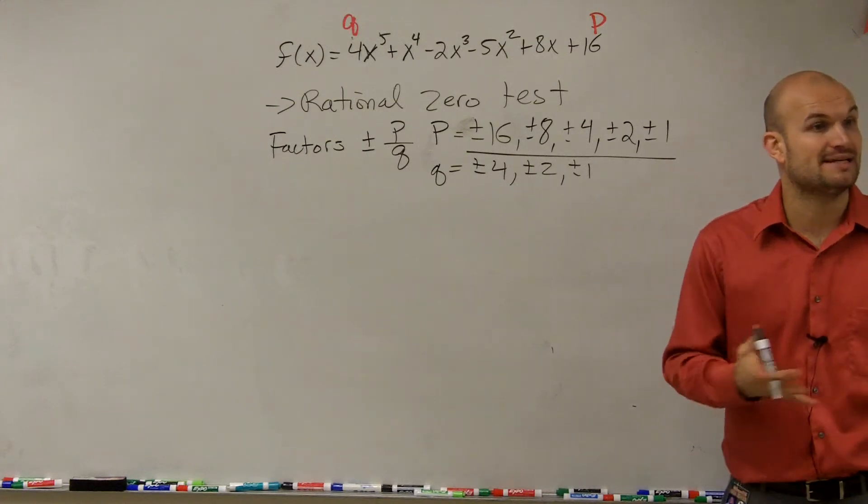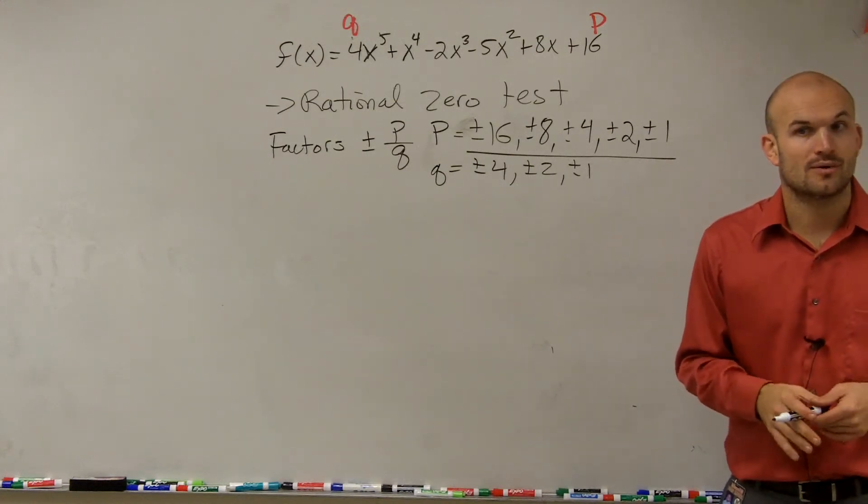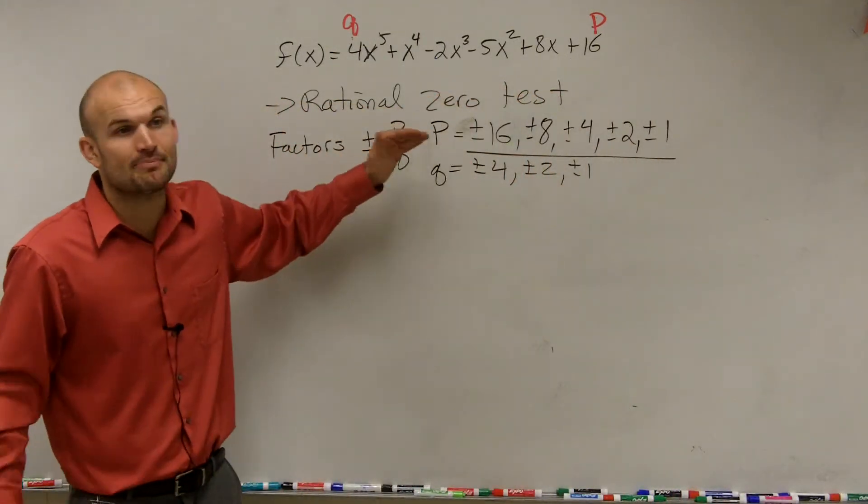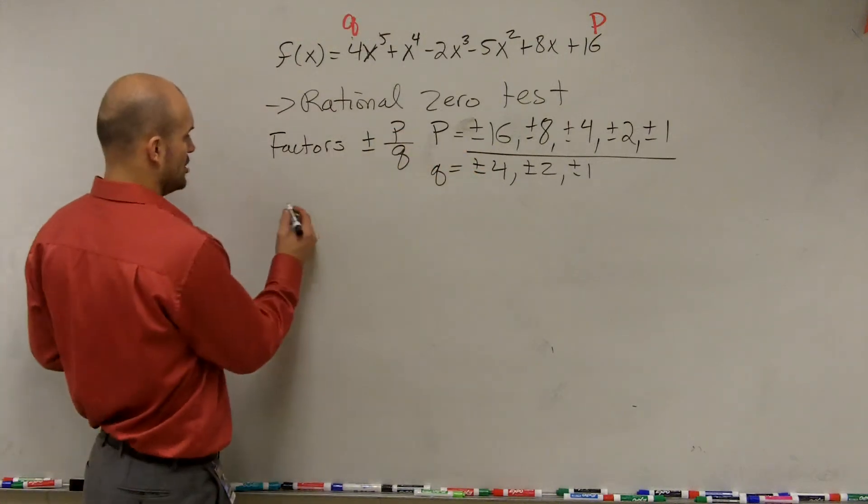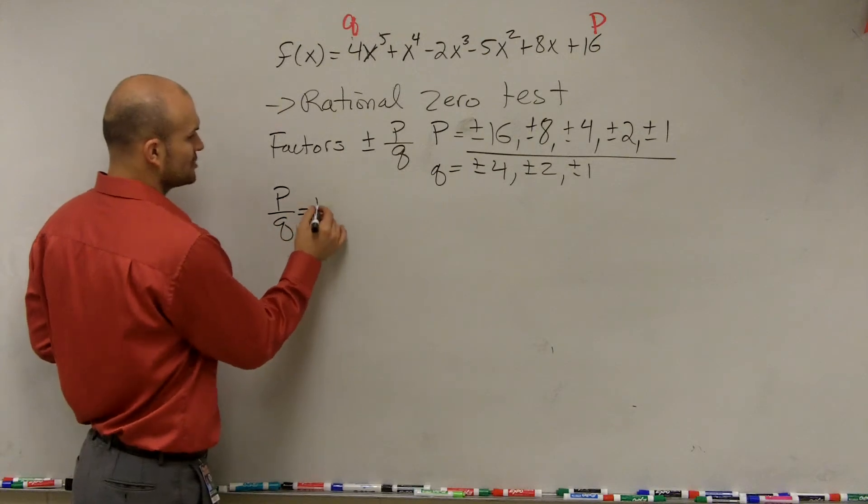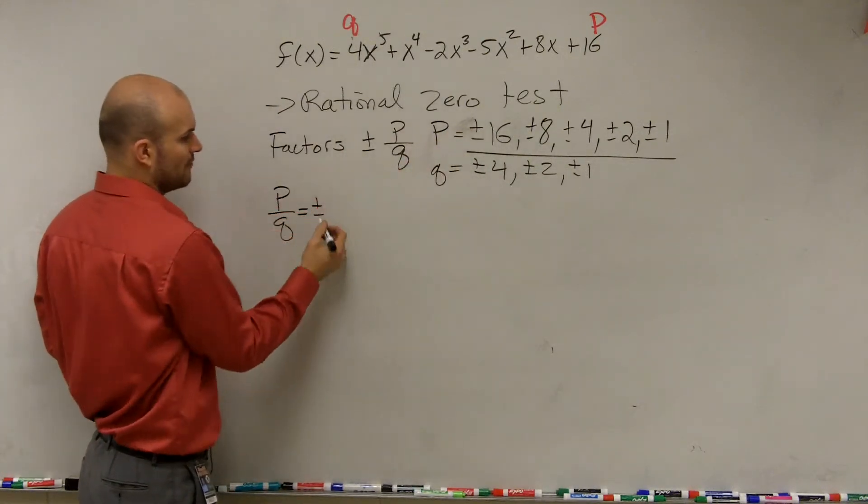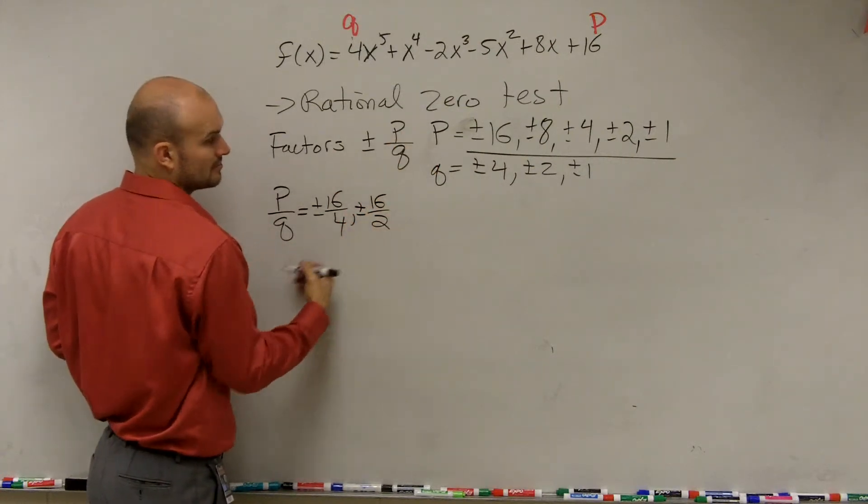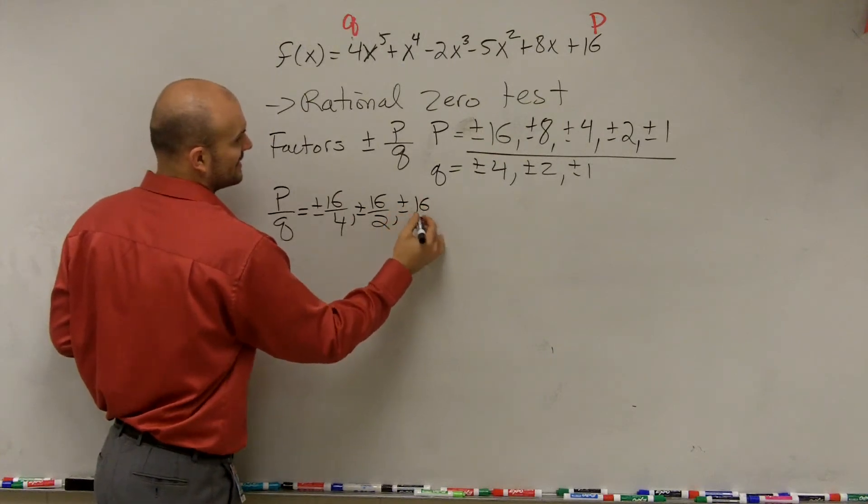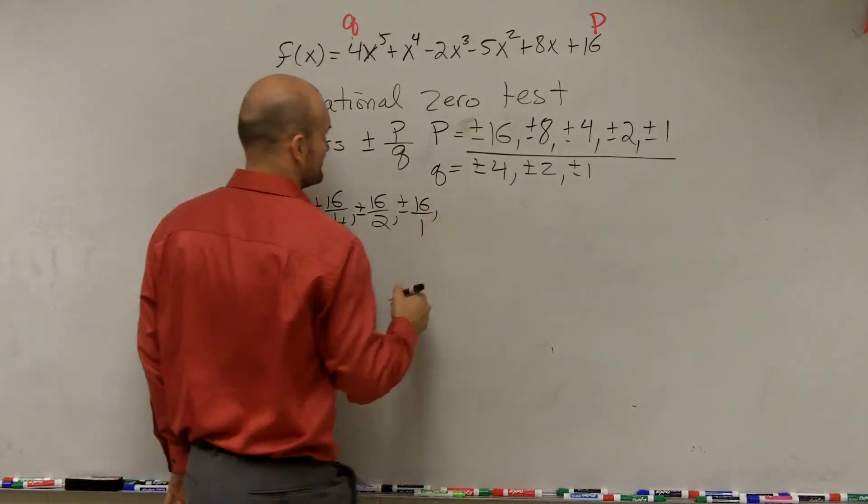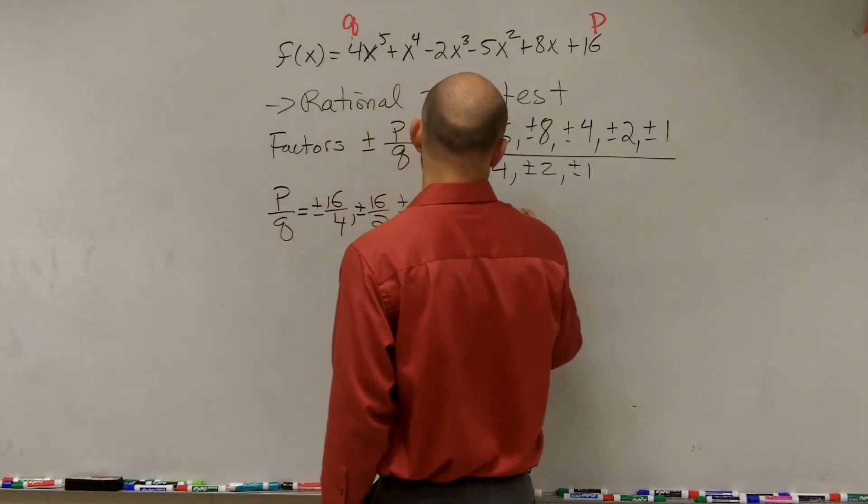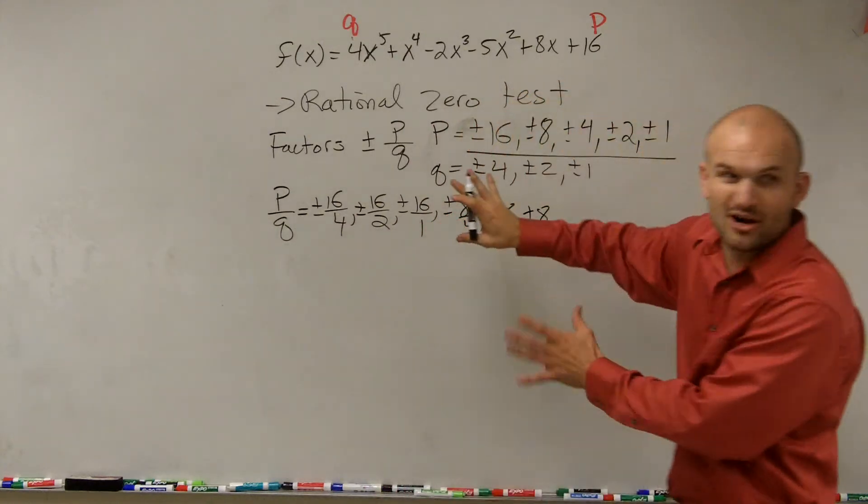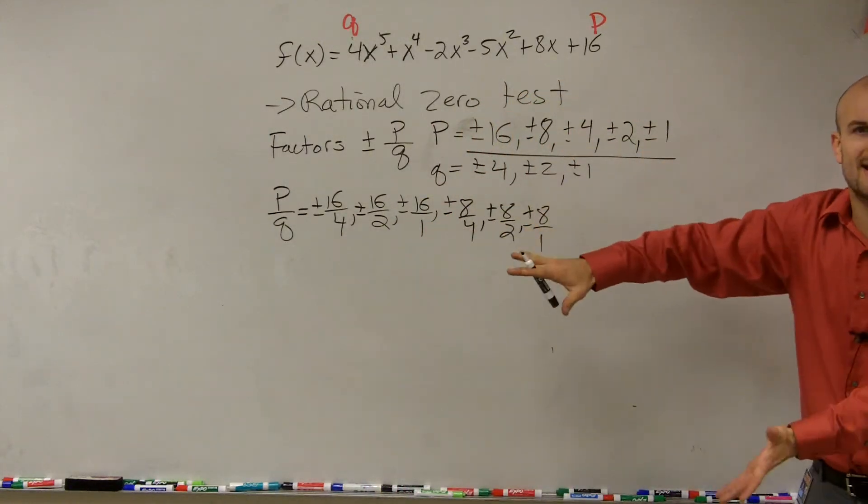So I think when you guys are getting started, it's helpful just to take your p over q and write out all the factors of each p or q, plus or minus. Because then, now what we need to do is we need to match them up. So listing all the possible rational zeros are going to be all your possible p over q's. I'm writing this all out so you guys can see it. You don't need to write out every single solution.